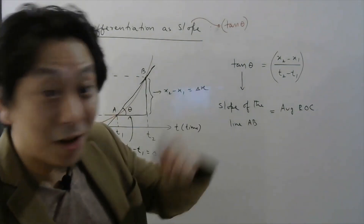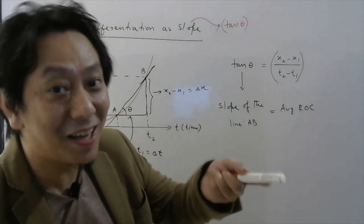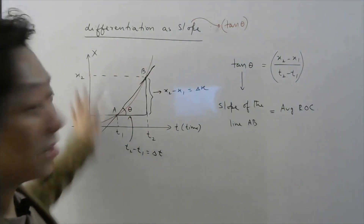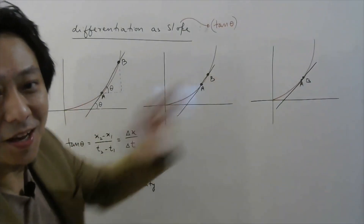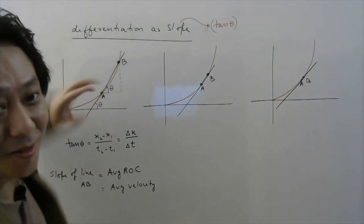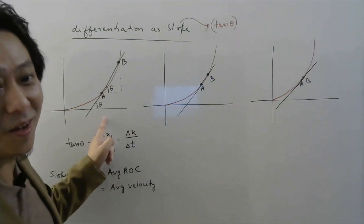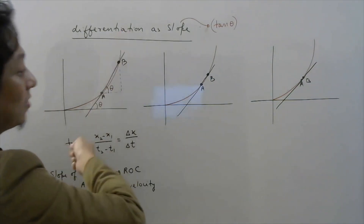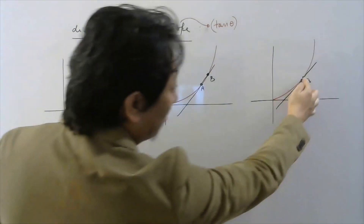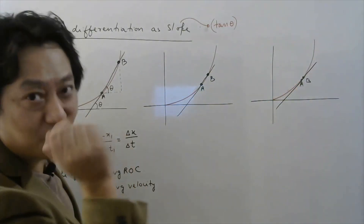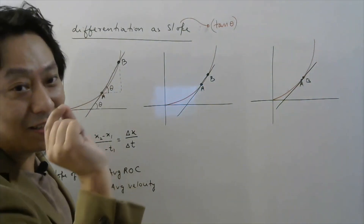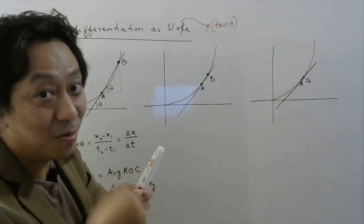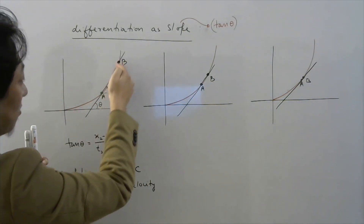Now we want to talk about differentiation — dx by dt. This happens when t2 becomes very close to t1. As I bring B closer to A, the average rate of change becomes instantaneous rate of change. The line joining the two points first tilts, and when you bring B very close, those two become almost the same point. When you draw this line it touches basically just one point, because delta t tends to zero means t2 tends to t1, and this point comes very very close to that point.